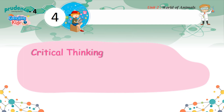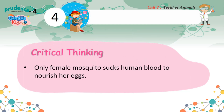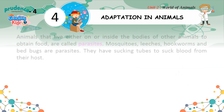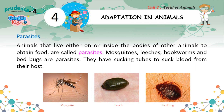Critical Thinking: Only the female mosquito sucks human blood to nourish her eggs. Parasites. Animals that live either on or inside the bodies of other animals to obtain food are called parasites. Mosquitoes, leeches, hookworms, and bedbugs are parasites. They have sucking tubes to suck blood from their host.